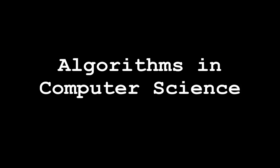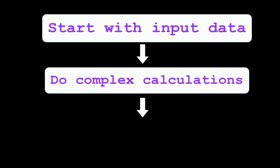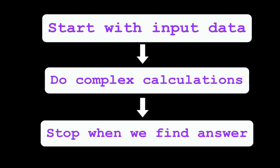In computer science, an algorithm is a set of steps for a computer program to accomplish a task. Algorithms put the science in computer science, and finding good algorithms and knowing when to apply them will allow you to write interesting and important programs.